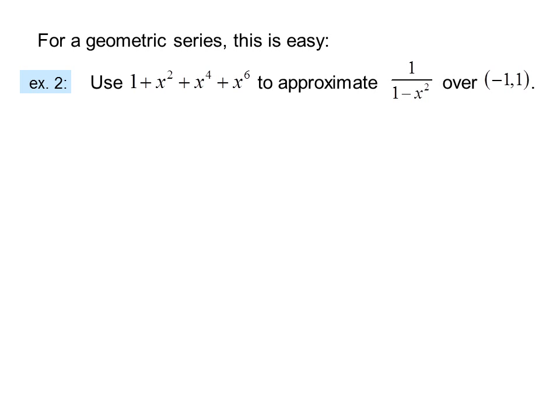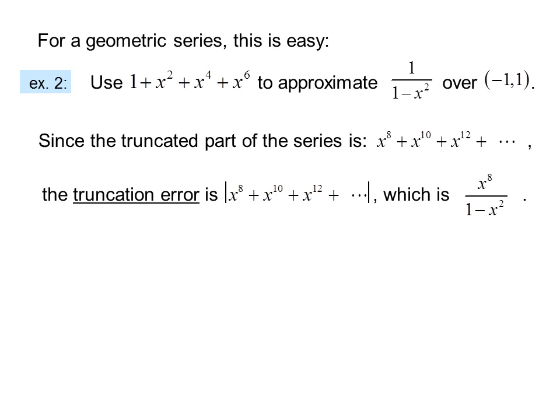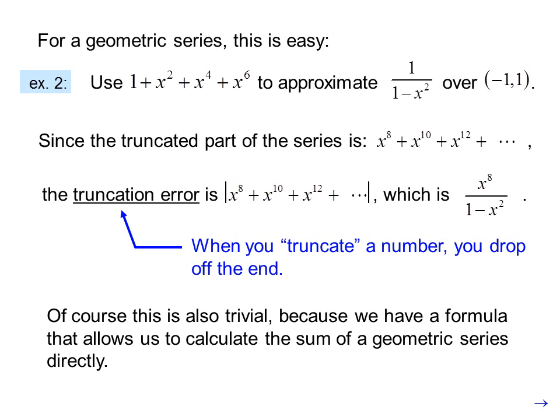For a geometric series, this is easy. Example: use 1 + x² + x⁴ + x⁶ to approximate 1/(1 - x²) over the interval (-1, 1). Since the truncated part of the series is x⁸ + x¹⁰ + x¹² + ..., the truncation error is the absolute value of x⁸ + x¹⁰ + x¹² + ..., which equals x⁸ / (1 - x²). This is also trivial because we have a formula that allows us to calculate the sum of a geometric series directly.